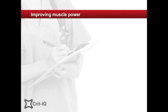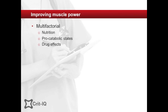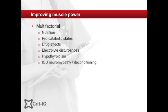The improvement of respiratory muscle power requires a multimodal approach. Factors that can contribute include nutrition, pro-catabolic states such as burns, trauma, pancreatitis and sepsis, drugs such as steroids, sedatives, muscle relaxants and aminoglycoside antibiotics, electrolyte disturbances, hypothyroidism, ICU neuromyopathy and general deconditioning, and fatigue and sleep deprivation.